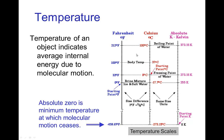The Fahrenheit and Celsius scales have both positive and negative temperatures. The Kelvin scale is calibrated so that it has all positive temperatures, with zero being the coldest possible temperature. This is called absolute zero — the temperature at which all molecular motion ceases.